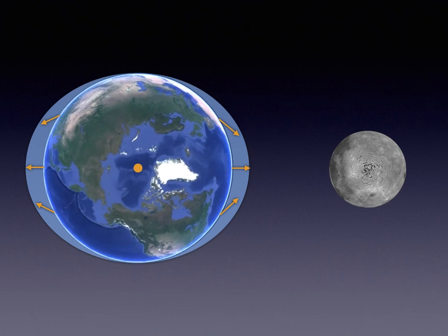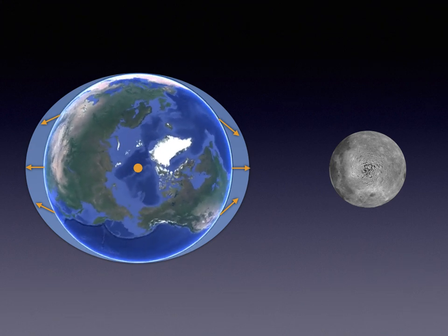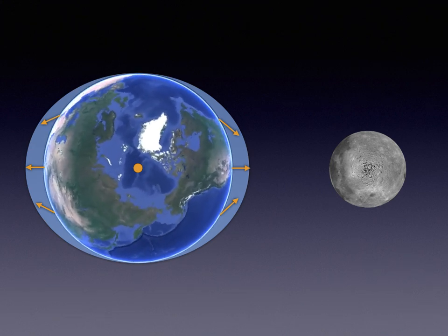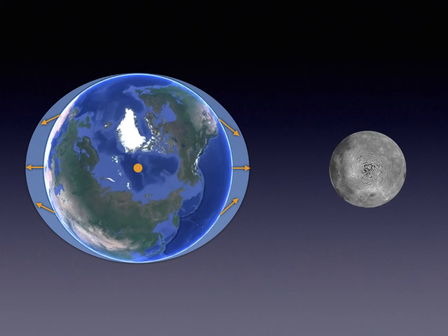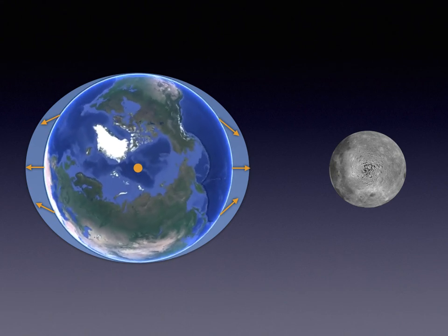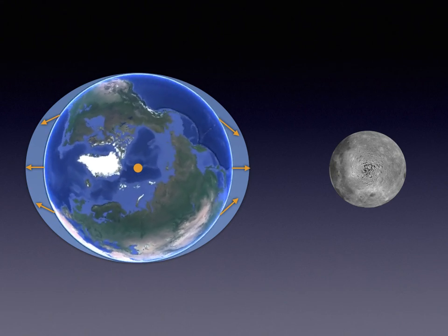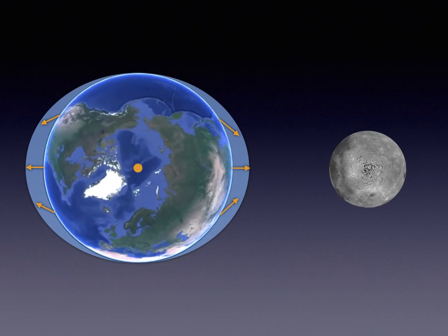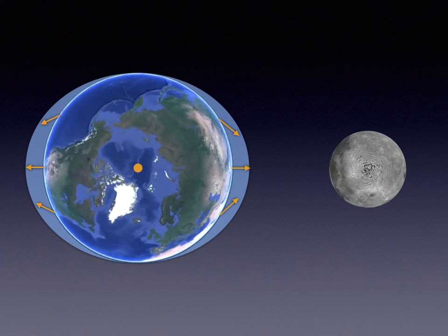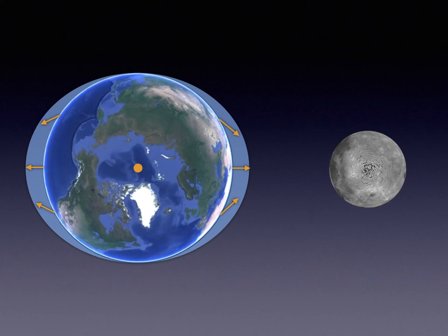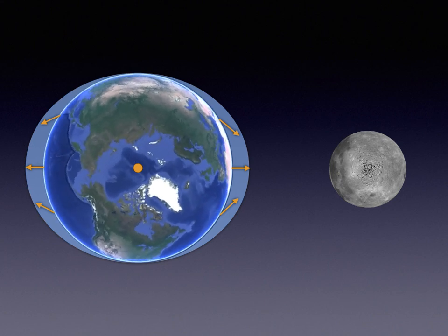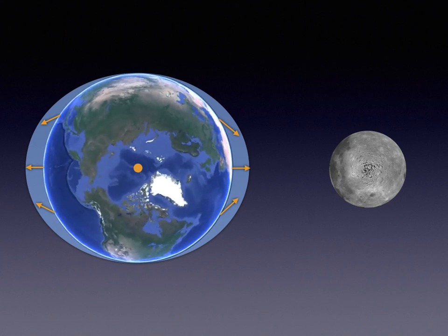The Earth's rotation generates two high tides per day. Bill O'Reilly has been waiting patiently for nine years, and now finally he has an explanation for how the tide goes in and how the tide goes out.